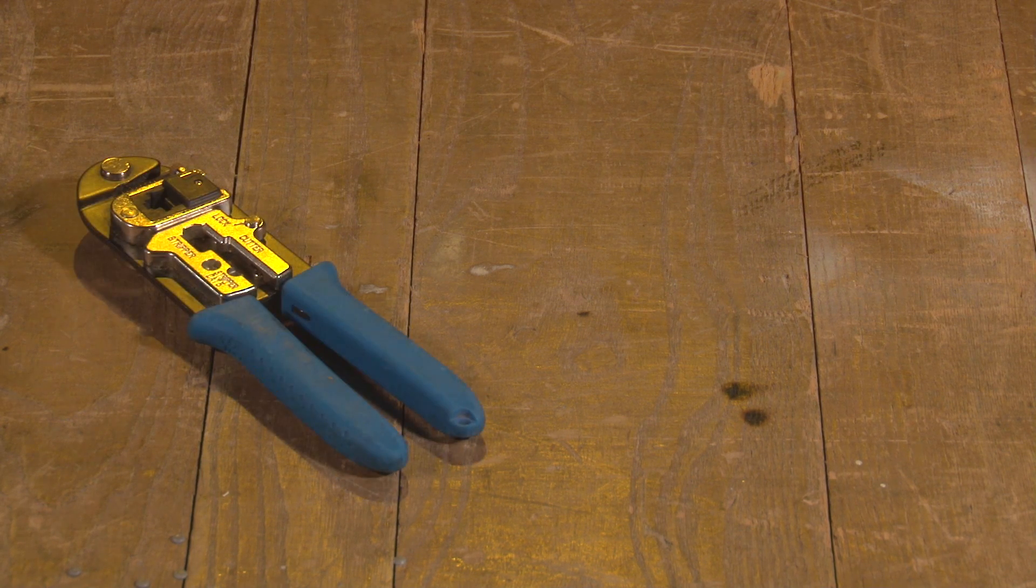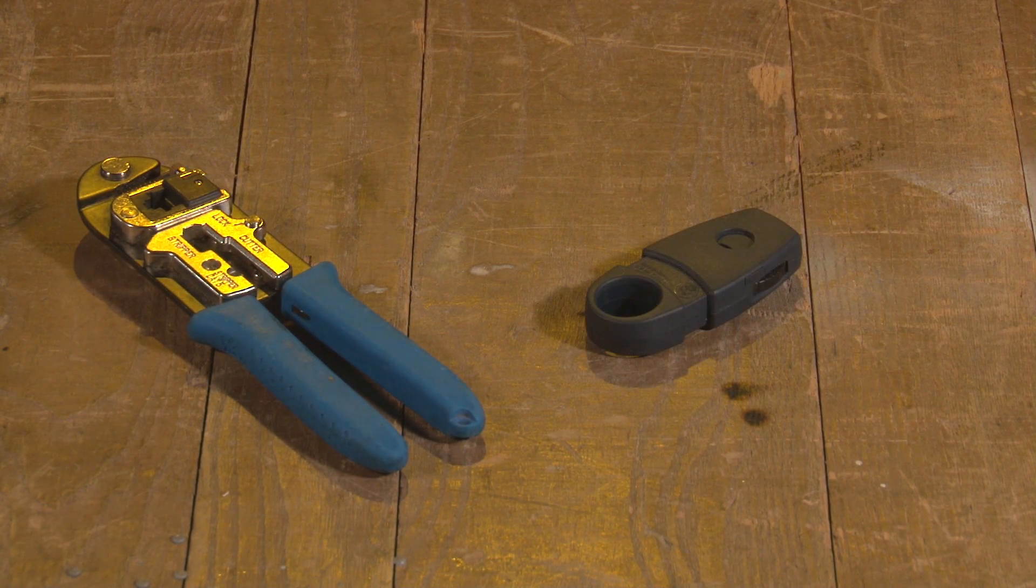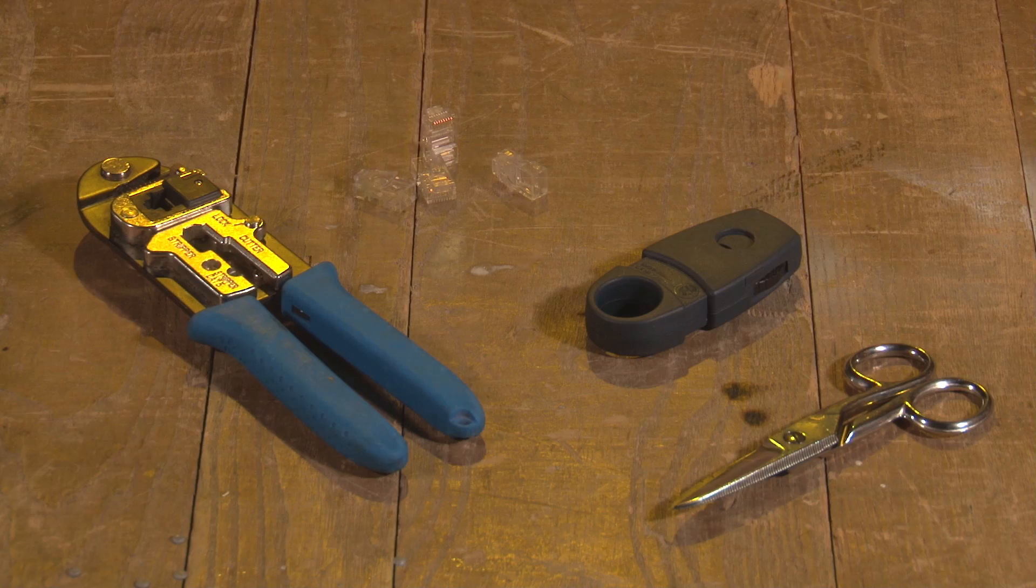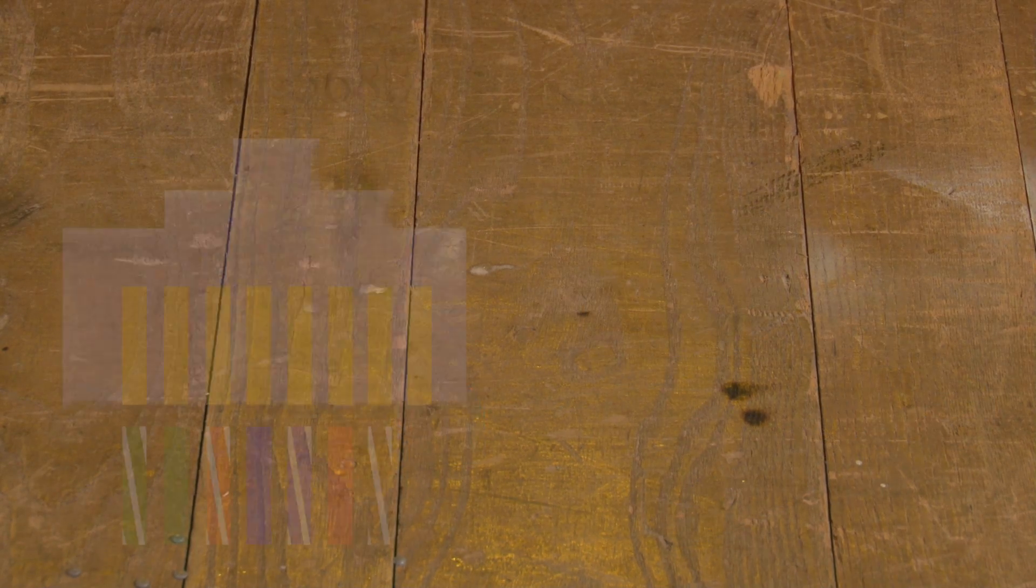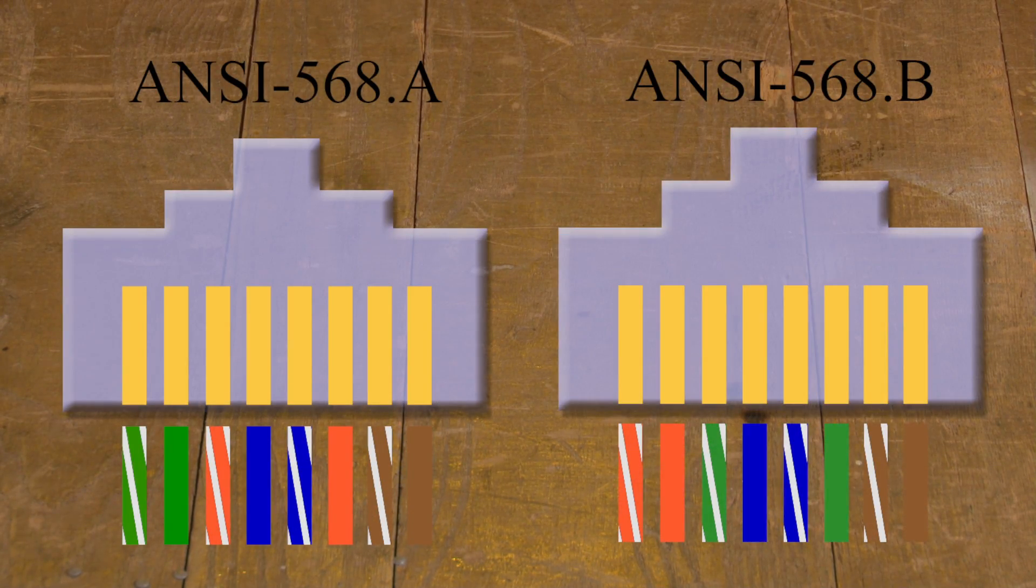To terminate one, you will need an RJ45 crimping tool, cable strippers, snips, and some RJ45 jacks. There are two types of pin assignments, A and B.